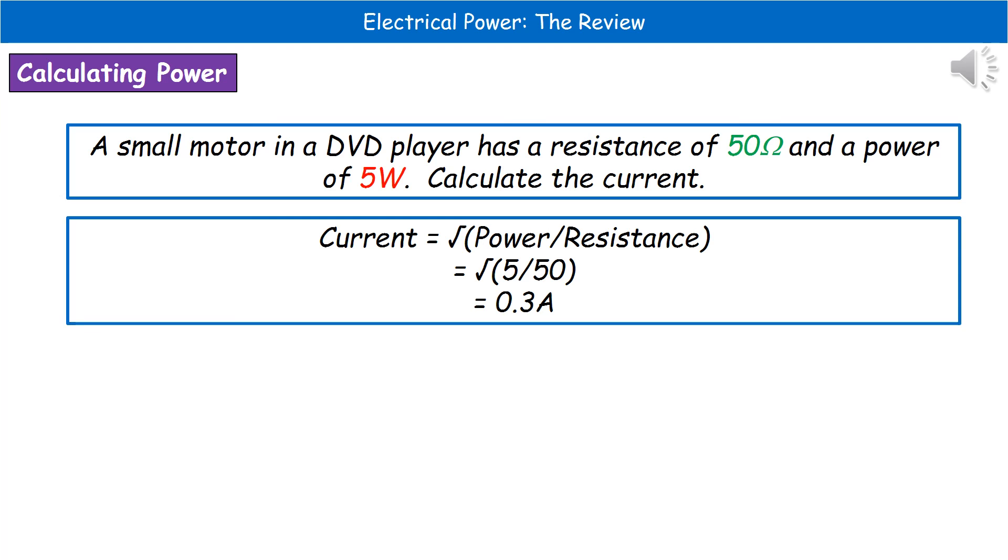We've got resistance, we've got power, we need to calculate the current. In order to do that, we do have to rearrange our equation so that means that our current is the square root of power divided by resistance.